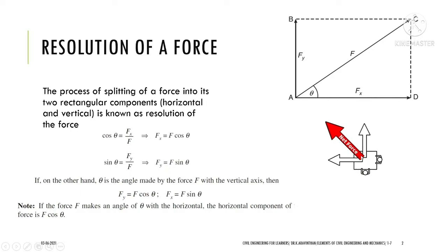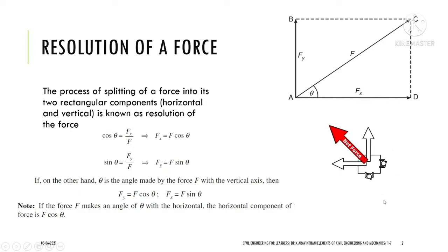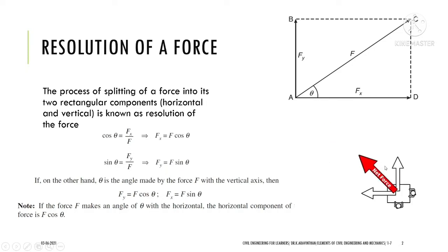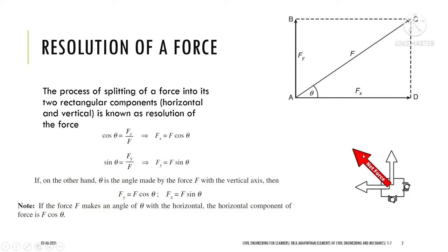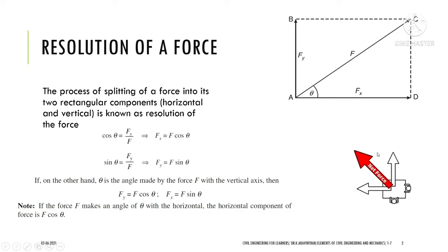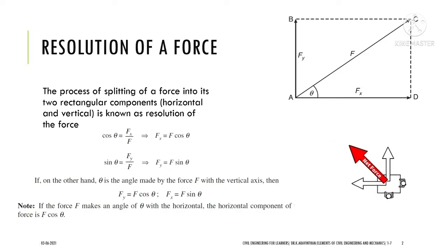Consider a practical case with a table. If two persons are moving this table in different directions — one vertically and one horizontally — the resultant force will be in a different direction, neither purely vertical nor purely horizontal. If you know the angle of the net force, you can resolve it into vertical and horizontal components. Conversely, if you know the components, you can find the net force.